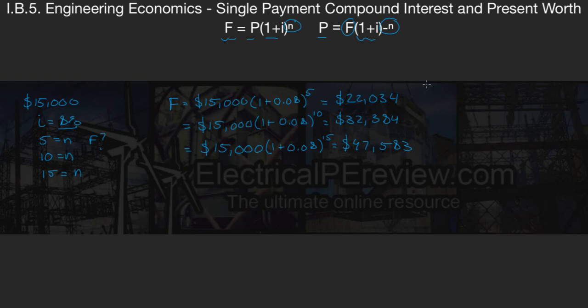So these were all examples of finding F, our future amount, if we know our P, our present worth, is a given.